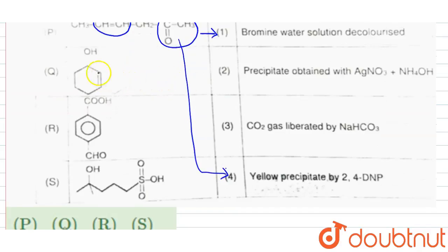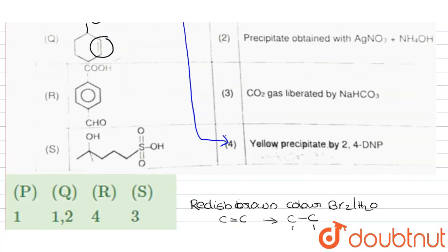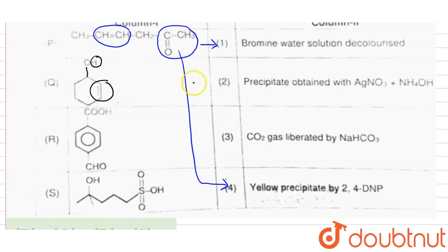In the case of 2, here we have an alkene group and also an acidic hydrogen or alcohol group. So this will give positive test with 2 and also 1.